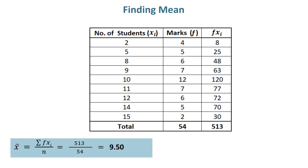Finding mean. In order to find the mean of ungrouped data, there are no class limits, class boundaries, and class marks or class midpoints to find; thus number of students becomes class marks or midpoints. Frequencies are also given in front of each class mark. By adding all frequencies, which are 54, and multiplying the first and second columns to get the product of fxi, we find the sum of fxi, which is 513. The mean in this example is 9.50, obtained by dividing 513 by 54.